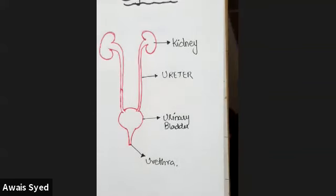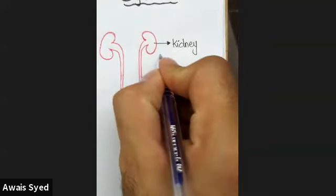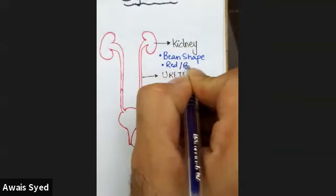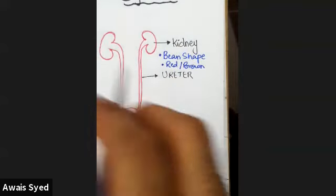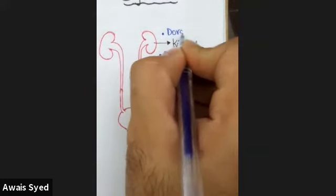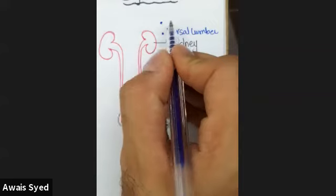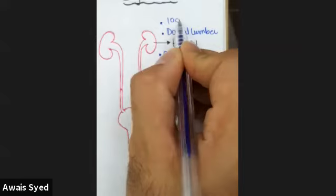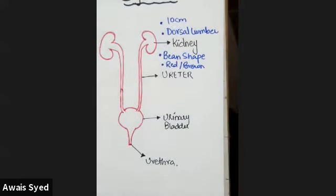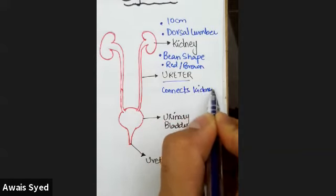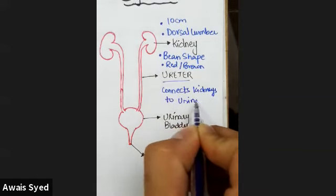Now let's talk about the kidney. The kidney is a bean-shaped organ. If someone asks you the size of the kidney, you can say that the kidney is 10 cm long. After the kidney, you have a duct called the ureter. The ureter connects the kidneys to the urinary bladder.